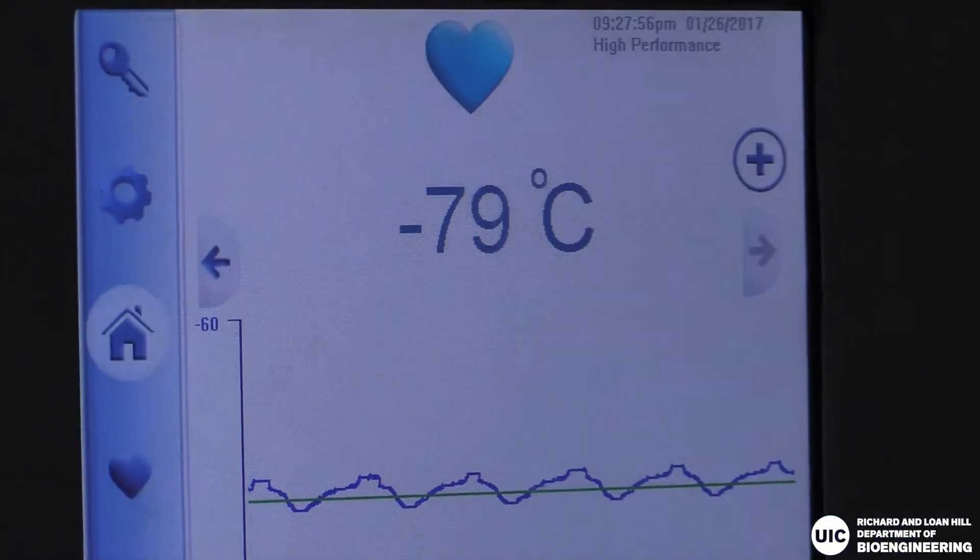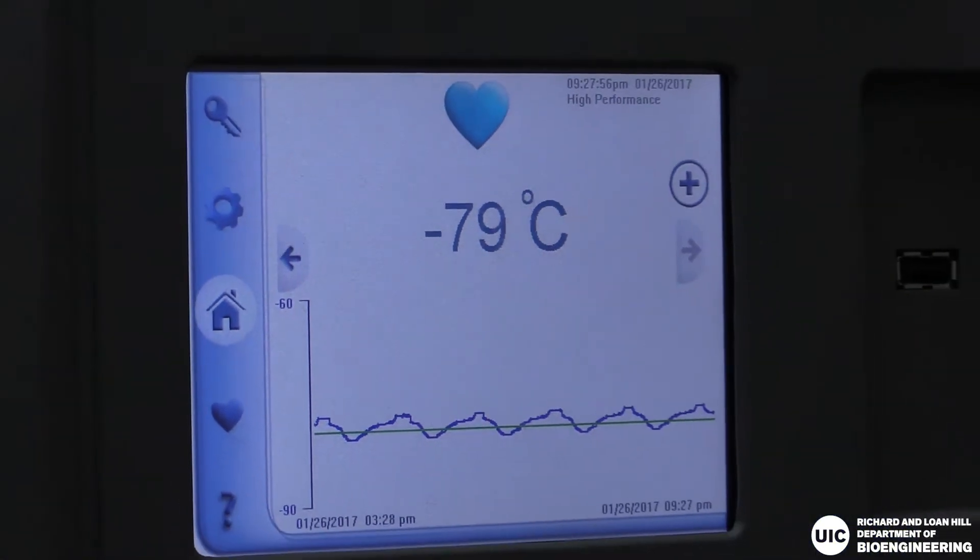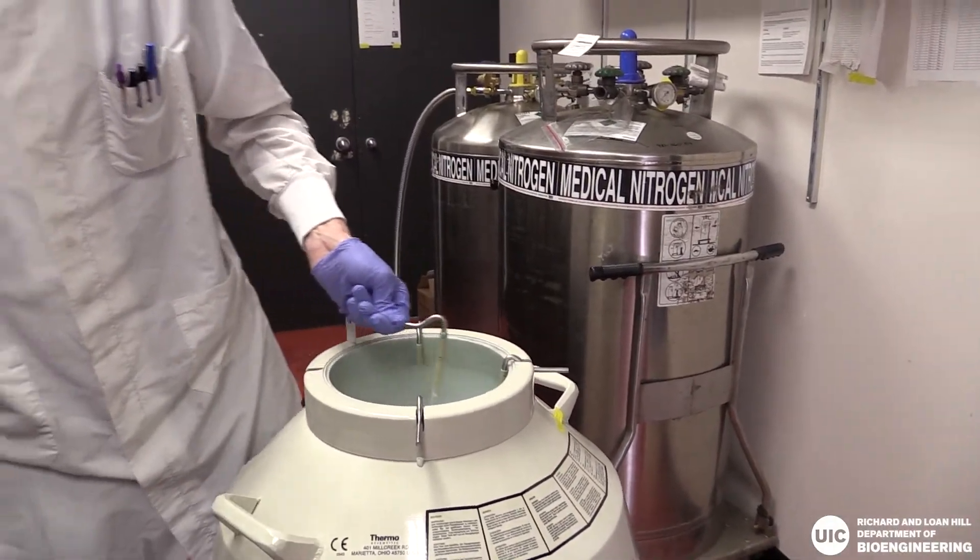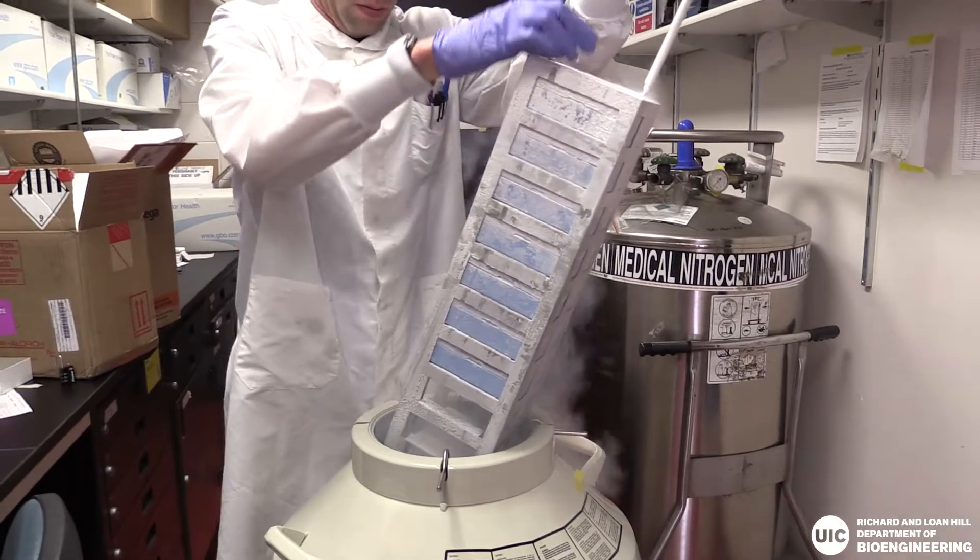Finally, our miniature liver tissues can be used to mimic global human diseases like hepatitis, malaria, and diabetes, so that better therapies can be developed against these diseases.